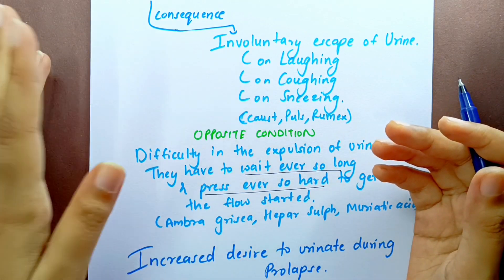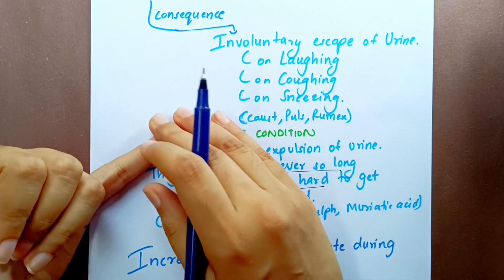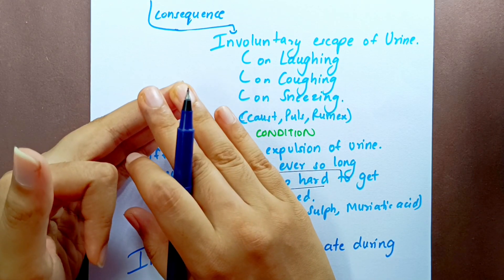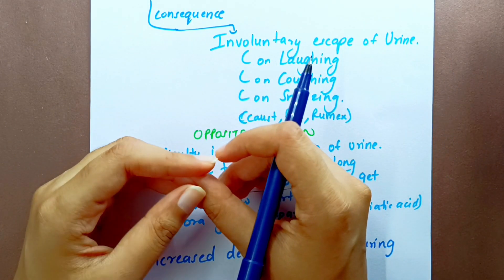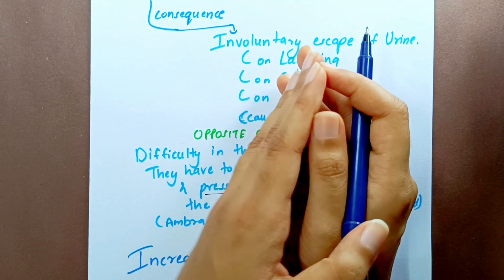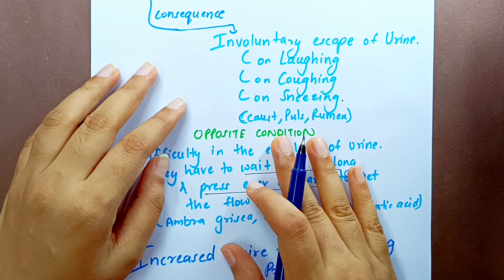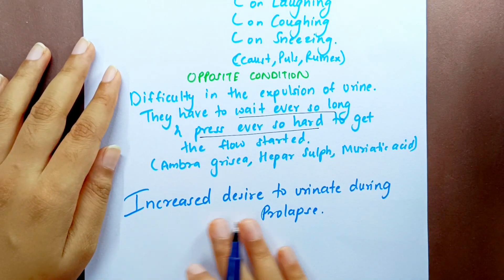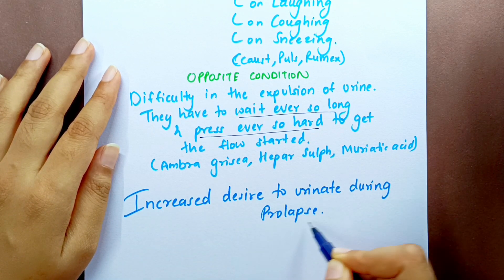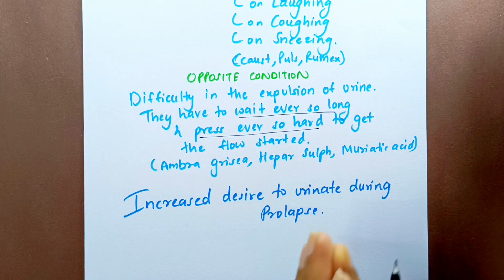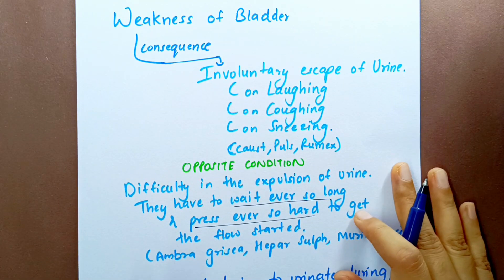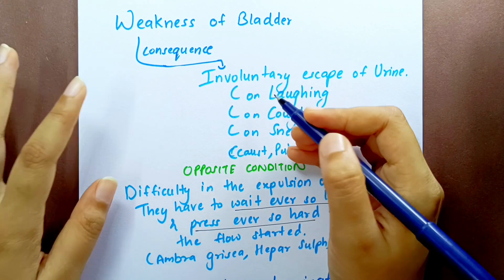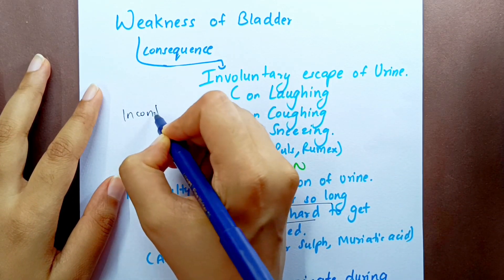There is also increased desire to urinate during uterine prolapse — this will be discussed more in Part 2 along with female and male symptoms, digestive tract symptoms, and the malarial fever for which Natrium Muriaticum is very well known. Both incontinence and difficulty in urination can occur in Natrium Muriaticum — not in the same patient, but both are possible presentations.